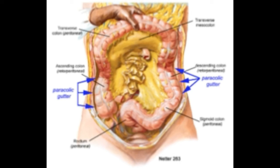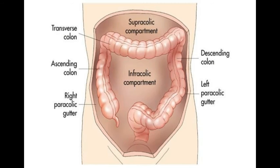The left gutter runs between the descending colon and the abdominal wall and, just like the right gutter, empties into the lower abdomen and pelvic area. This gutter is, however, much smaller because it is restricted at the top by the phrenicocolic ligament, or the ligament supporting the top left edge of the colon. The phrenicocolic ligament prevents the left gutter from being continuous with the perisplenic space.